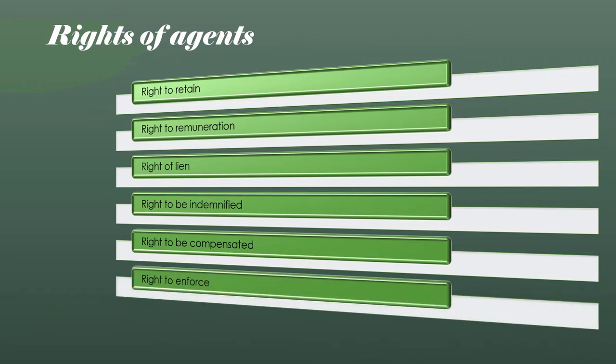The last and perhaps most important right is the agent's right to enforce duties of the principal. For example, the principal has a duty to indemnify the agent, a duty to compensate the agent, and a duty to give enough information to the agent. These are duties of the principal, and the agent gets a corresponding right to enforce them.